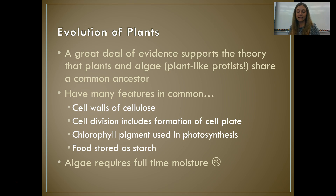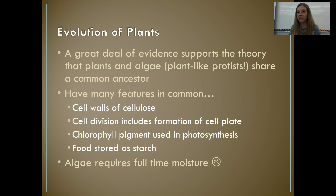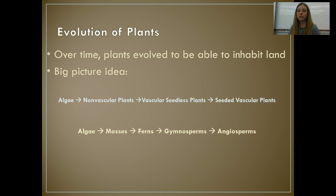The biggest difference is that plant-like protists don't have specialized tissues or organs, which means they require moisture full-time because they don't have the tissues that can help them live without it. So algae require full-time moisture. Over time, plants evolved to be able to inhabit land and dry ground.